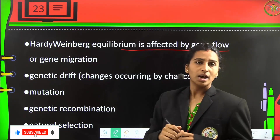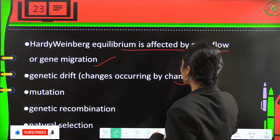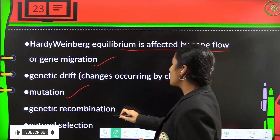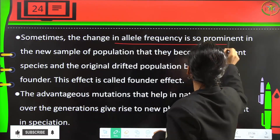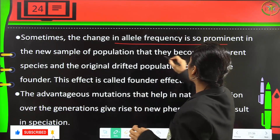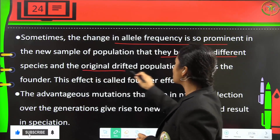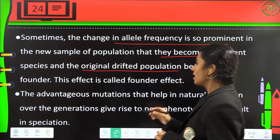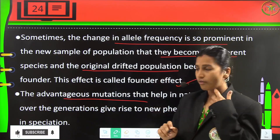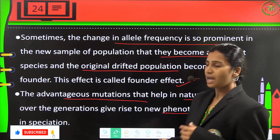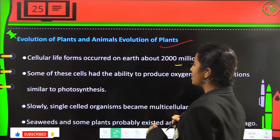Hardy-Weinberg equilibrium is affected by gene flow and gene migration. Genetic drift, mutations, genetic recombination, and natural selection also affect allele frequencies. Sometimes changes in allele frequency are so prominent that a new sample of the population can become a different species, while the original population becomes the founder — this is called the founder effect. Advantageous mutations that help in natural selection over generations give rise to new phenotypes, resulting in speciation.